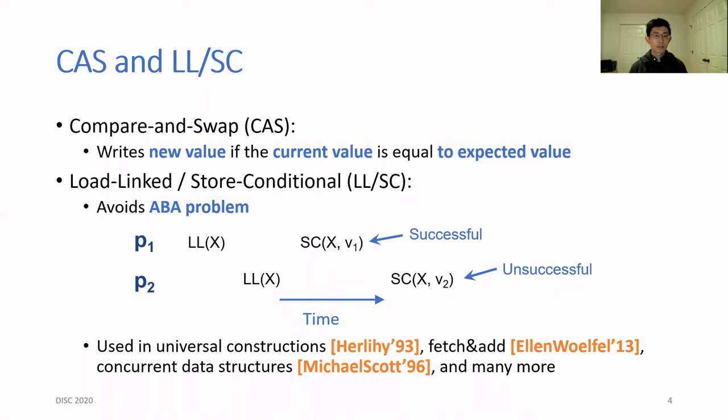Compare-and-swap forms the backbone of many shared memory algorithms. It takes three parameters: a memory location, an expected value, and a new value. It atomically compares the value at the memory location with the expected value and writes in a new value only if this comparison succeeds. If the comparison succeeds, it returns true and we say the CAS operation is successful. Otherwise, it returns false and we say it is unsuccessful.